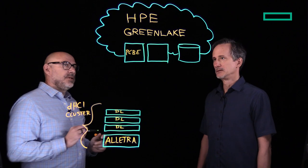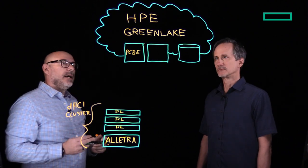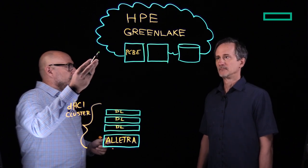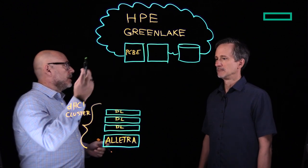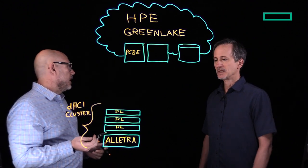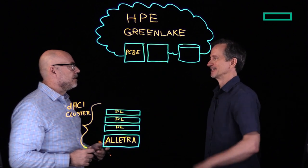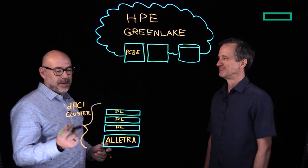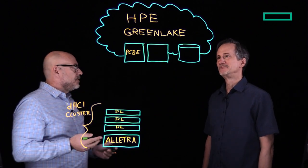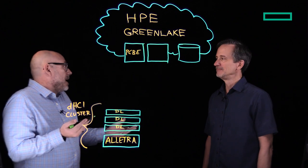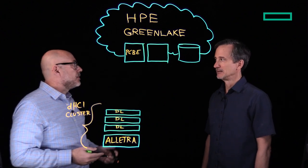Think of Private Cloud Business Edition, which runs in the HPE GreenLake Cloud, as your cloud control plane for managing your on-prem DHCI clusters and your hybrid cloud workloads. This allows us to basically manage our entire hybrid cloud workloads and provision those.